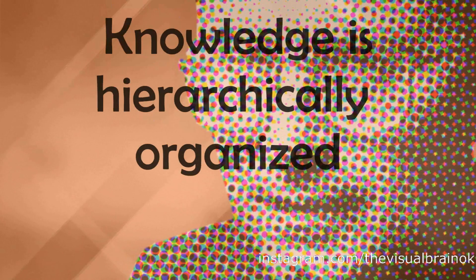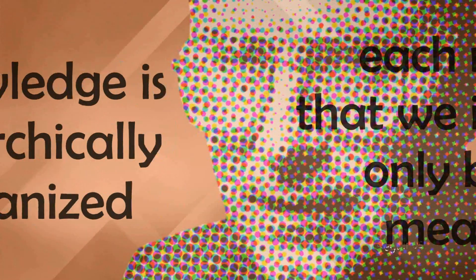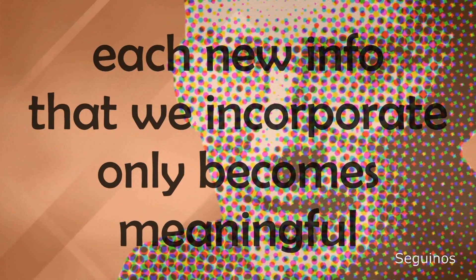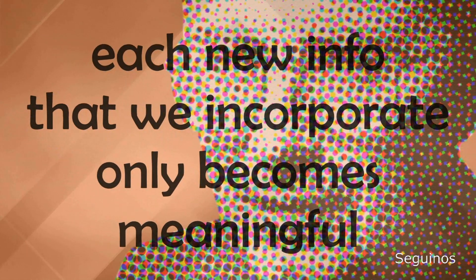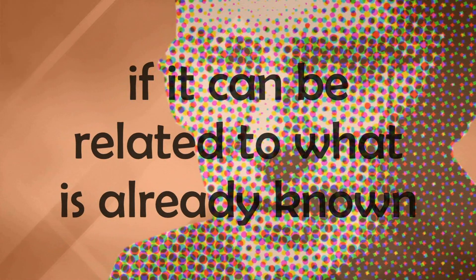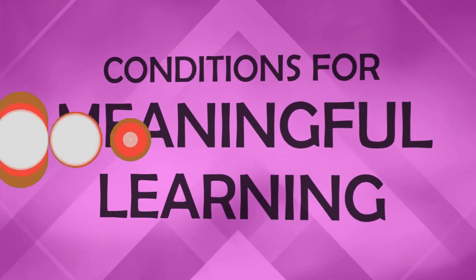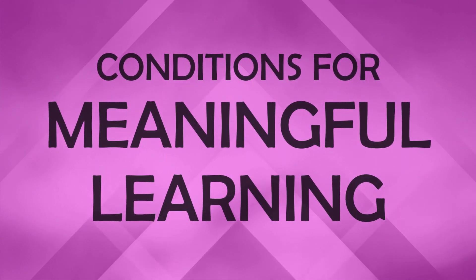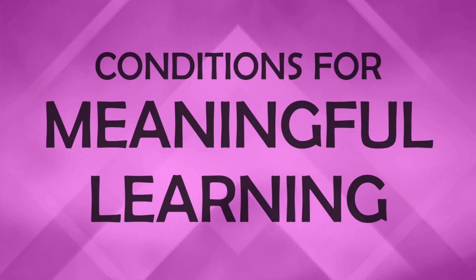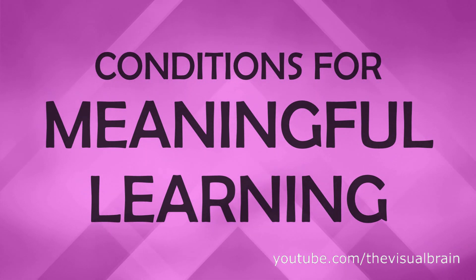Accordingly, Ausubel considers knowledge to be hierarchically organized — each new piece of information that we incorporate only becomes meaningful if it can be related in some way to what is already known. For meaningful learning to occur, certain conditions must be met, and those conditions have to do with the following three aspects.